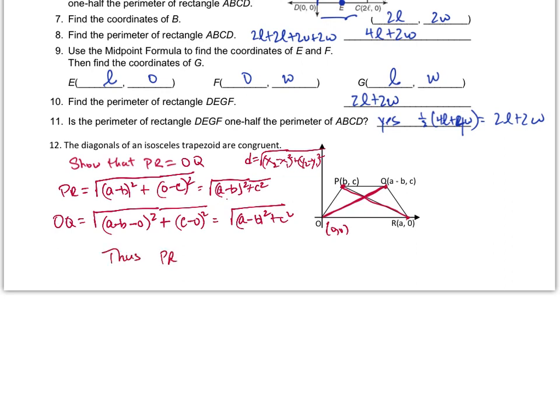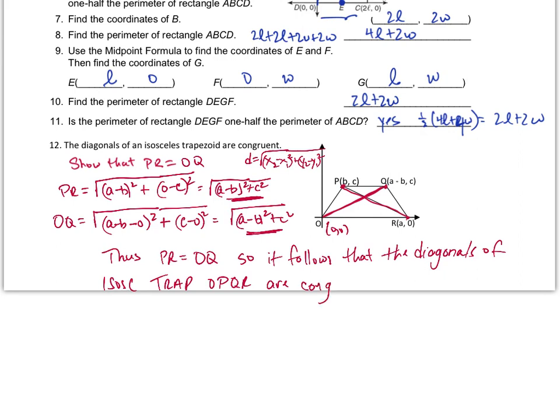Thus, PR, take a look at here and take a look at here, is equal to OQ. So it follows that the diagonals of isosceles trapezoid OPQR are congruent. And that is our coordinate proof, how we set it up.